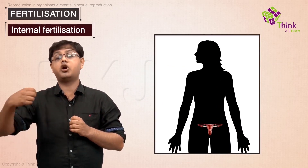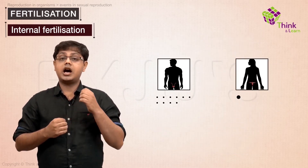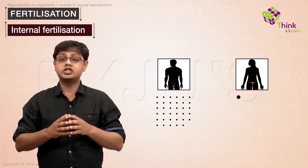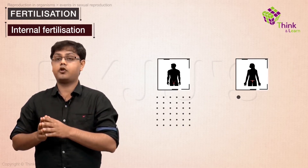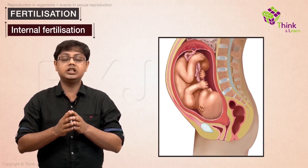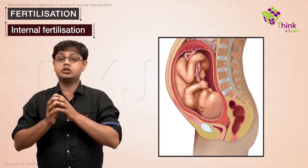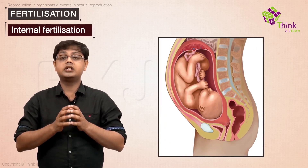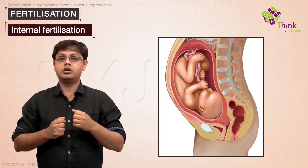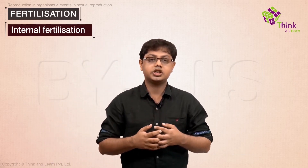In internal fertilization, the eggs are present inside the female organism and the male gametes or sperms are released into the body of the female. The eggs produced are limited in number and hence very few offspring are formed. However, the eggs being present inside the organism are better protected, and many times the offspring develops inside the female, giving it better chances of survival compared to offspring produced by external fertilization.